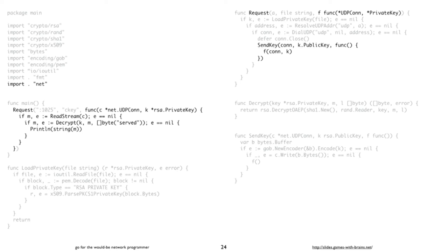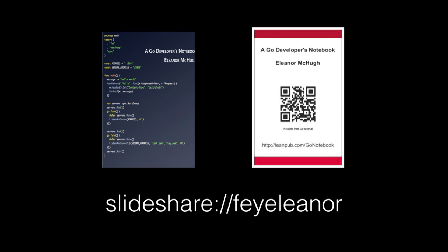That's pretty much everything there is to know about doing crypto over connections in Go. If you're not now doing it, download the first chapter of my book, which gets you to hello world in RSA over UDP in 60 pages. It costs you nothing. And then you can go and write secure infrastructure for your microservices. Thank you.